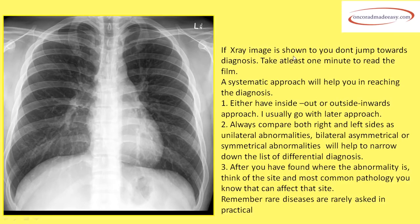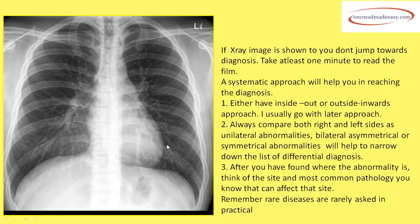When an X-ray image is shown to you, don't jump towards a diagnosis. Take at least one minute to read the film. A systematic approach will help you reach the diagnosis — either an inside-out or outside-inward approach. Always compare both right and left sides, as unilateral abnormalities or bilateral asymmetrical or symmetrical abnormalities will help narrow down the differential diagnoses. After finding the abnormality, think of the site and the most common pathology that can affect it. Remember, rare diseases are rarely asked in the practical.